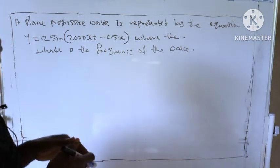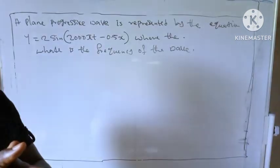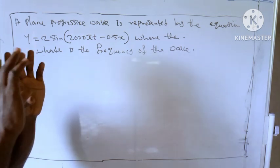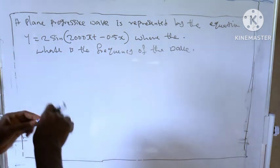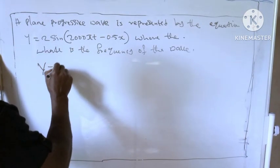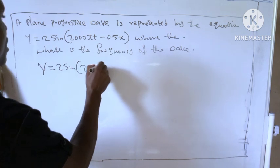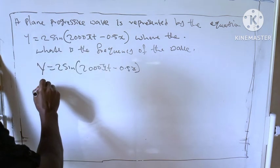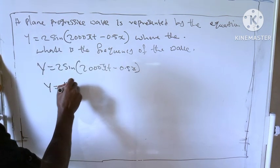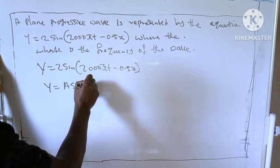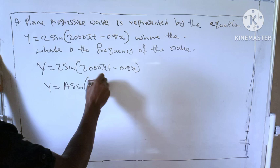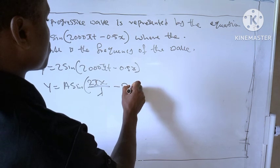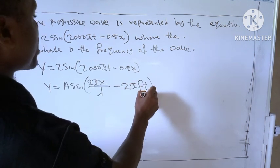If you have studied wave before, you know we have a specific formula where we write and compare the two formulas, then from there we calculate for whatever we want to calculate for. So here we are given y = 2sin(2000πt - 0.5x), right. So the formula we use is y = a sin(2πx/λ - 2πft).